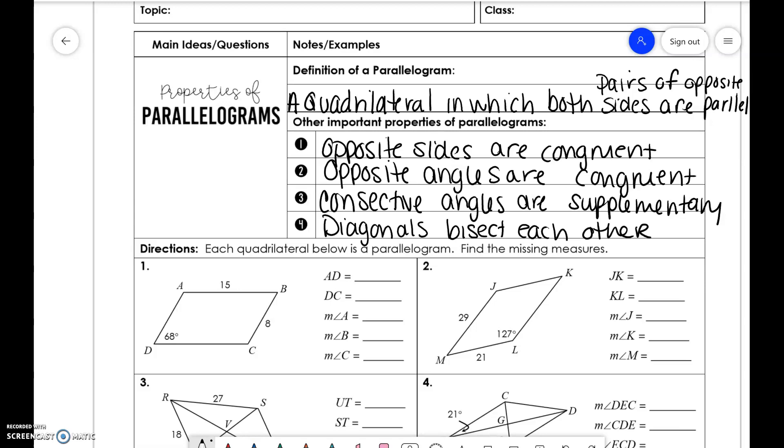Okay, so we're going to complete a couple of problems about parallelograms. And here we go. So AD is the same thing as BC. It is 8. DC is the same thing as AB, which is 15. Angle A, so angle A and angle D are supplementary. So 180 minus 68 is 112. Angle B is the same thing as angle D, which is 68. And angle C is the same thing as angle A, which is 112.